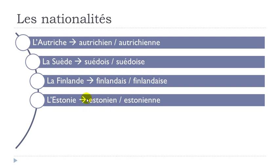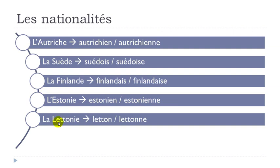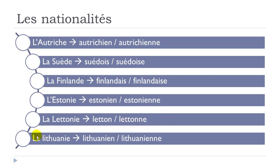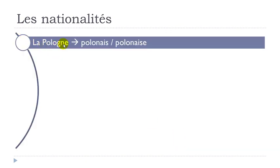L'Estonie — estonien, estonienne. Same thing here: double N, E and then you open it — estonienne. La Lettonie — letton, letton. La Lituanie — lituanien, lituanienne. You open the E — lituanienne. La Pologne — polonais, polonaise.